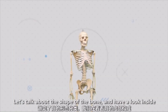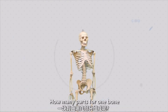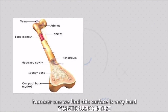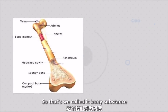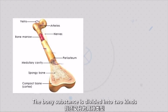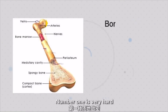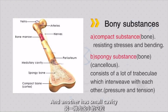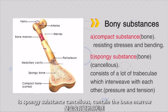So we have talked about the shape of bone. Now let's look inside — how many parts are in one bone. On the surface it is really hard, that's what we call the bony substance. The bony substance divides into two types. Number one, the outer surface is very hard — that's what we call compact substance. At the two extremities it is softer and has very small cavities inside — that's what we call sponge substance. Sponge substance has small cavities that contain bone marrow.